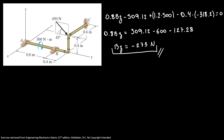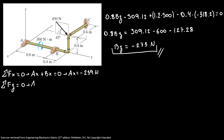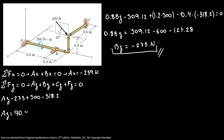Now to find the reactions at A, we do the sum of forces in X equals zero: AX plus BX equals zero, so AX equals minus 239 newtons. For the sum of forces in Z equals zero: AZ plus BZ plus CZ plus FZ equals zero. We have AZ minus 273 plus 500 minus 318.2 equals zero. So AZ equals 90.9 newtons. We have now found all our reactions.